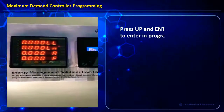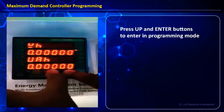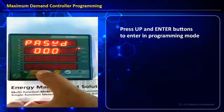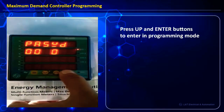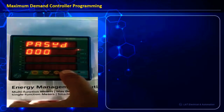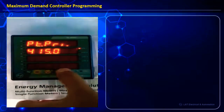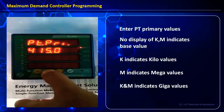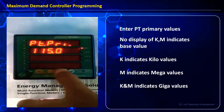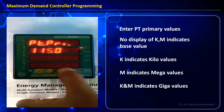To enter into programming mode, press the up and enter button and give the correct password. By default from the factory, 415 is set as PT primary; we will change this to 11 kV by selecting the appropriate digits.